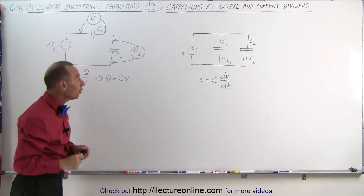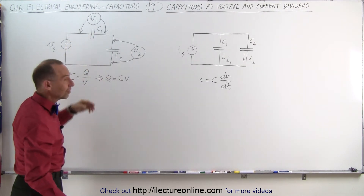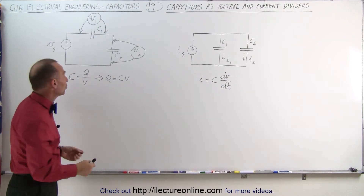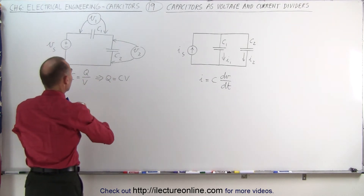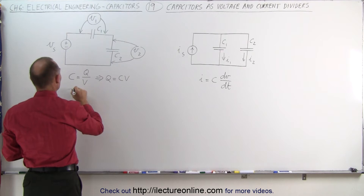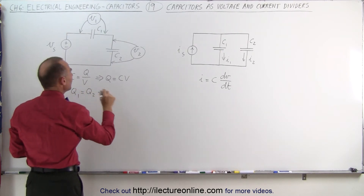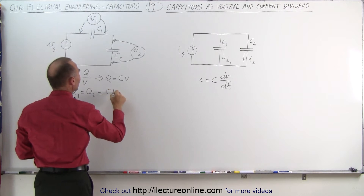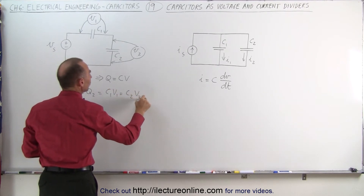We also know that for capacitors in series, the charge on each of them must be the same, which means Q across C1 must equal Q across C2. This means that C1 times V1 must equal C2 times V2.